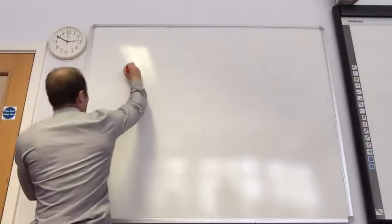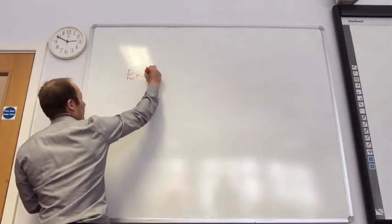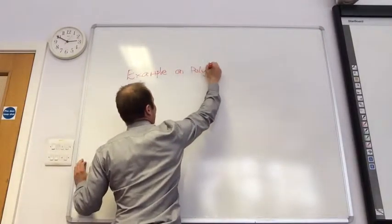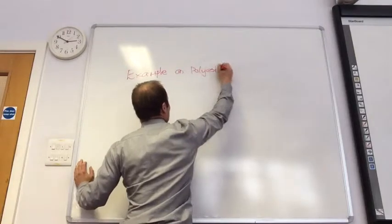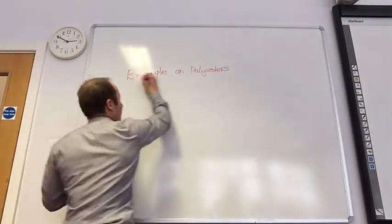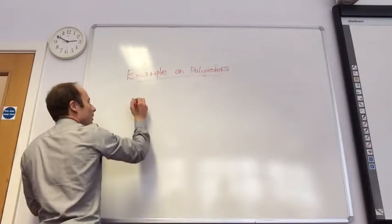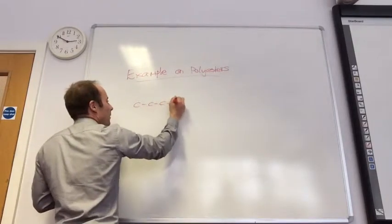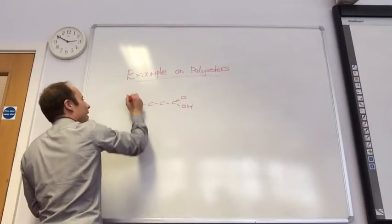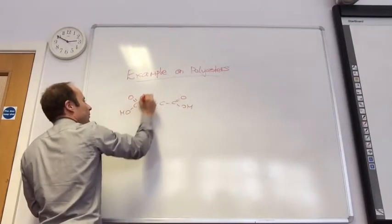Right, so here's the next item for you to do. Somebody get me some paper. So, butanedioic acid. I'd like you to draw the polymer that you make from... Can we do nylon? No, because that's a polyamide I'm going to do that next time.